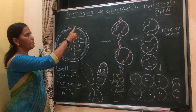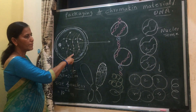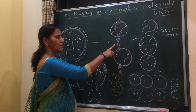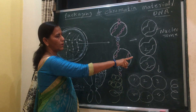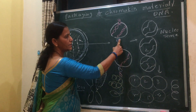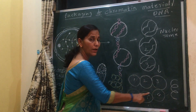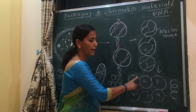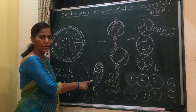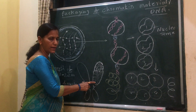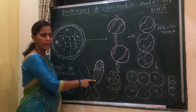Let us revise. Packaging of chromatin material occurs during cell division. The chromatin material consists of DNA, proteins called histone and non-histone. First, there is formation of the nucleosome fiber, in which the linker DNA is absent. It gets coiled to form a solenoid fiber — in each turn of the solenoid fiber there are 6 nucleosomes. Again, this coils to form a super solenoid fiber. The shortest and thickest chromosome is the metaphase chromosome. This is the packaging of chromatin material.